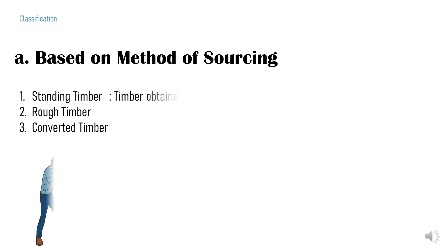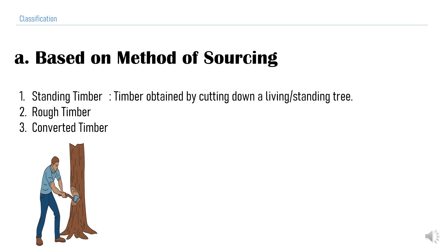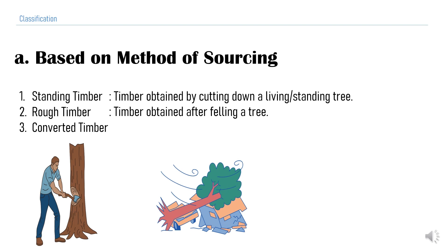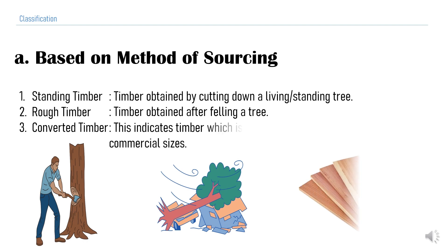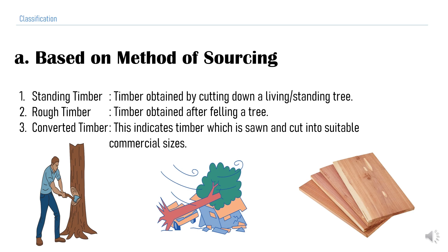Standing timber is the timber obtained by cutting down a living or standing tree — the tree is cut in its live condition. Rough timber is obtained from a tree that has fallen due to natural disasters, aging, or other causes. Converted timber refers to timber that has been sawn and cut into suitable commercial sizes available in the market, which can be used for construction activities.